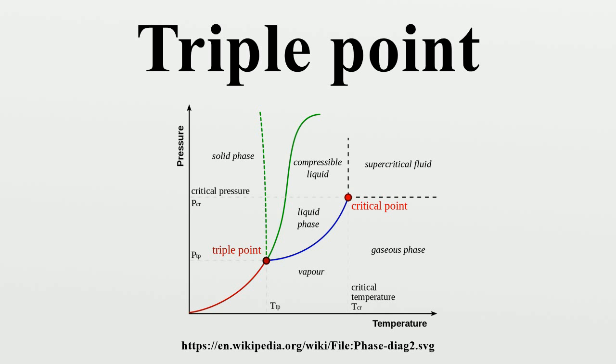For example, the triple point at 251 K and 210 MPa corresponds to the conditions for the coexistence of ice IH, ice III, and liquid water, all at equilibrium.